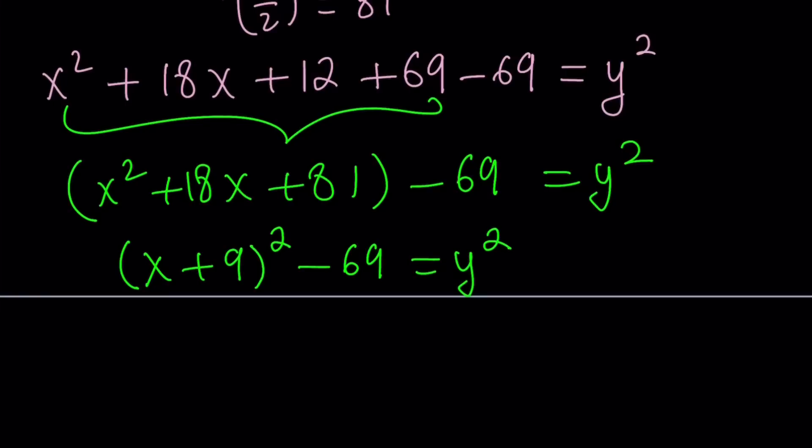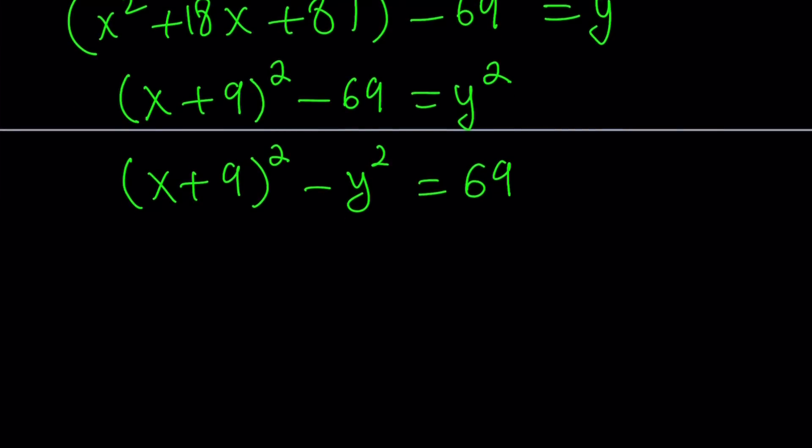Now, 69 is not a perfect square, but y² is. So let's go ahead and switch sides here. 69 and y² can be switched because 69 is being subtracted. So we can make it a difference of two squares. Now it's factorable by difference of two squares.